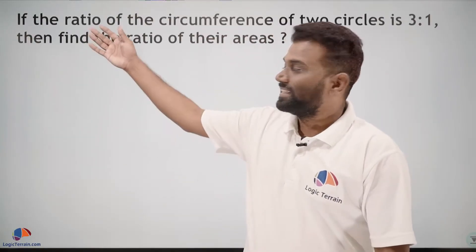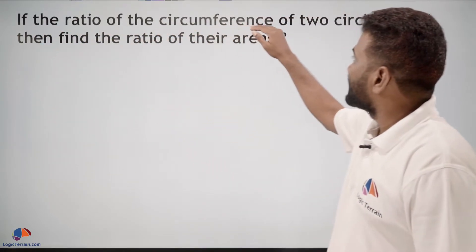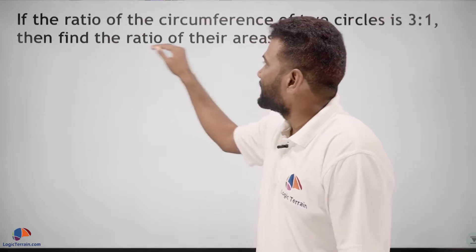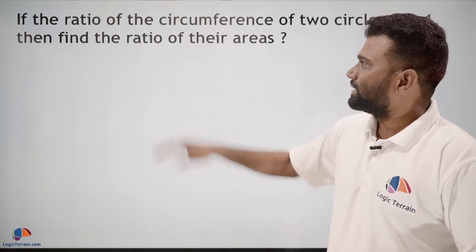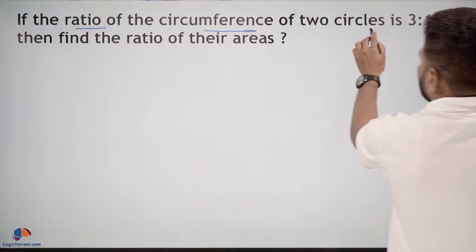Hello dear students, here is a very important question. If the ratio of the circumference of two circles is 3 to 1, then find the ratio of their areas. It is given ratio of circumference of two circles is 3 to 1.